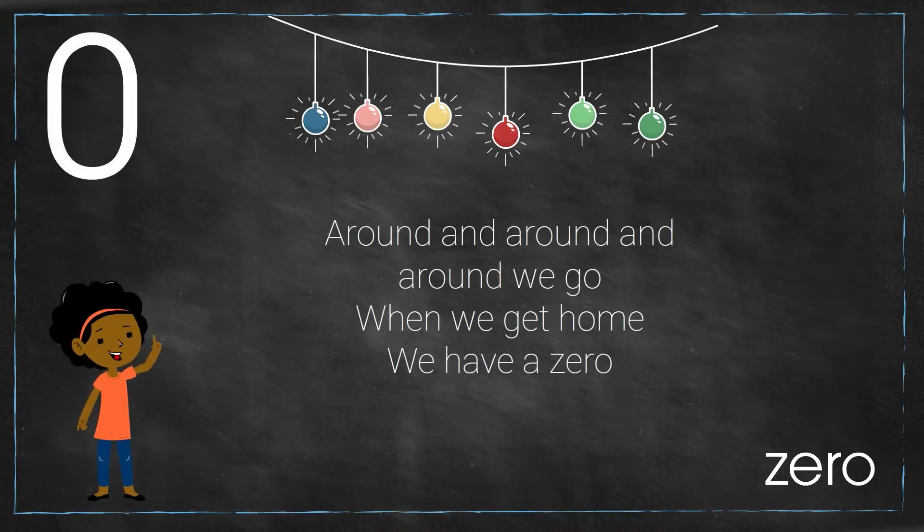Zero. How do we write zero? Around and around and around we go, when we get home we have a zero.